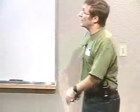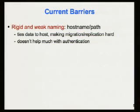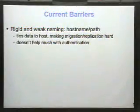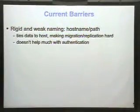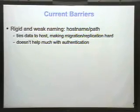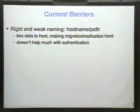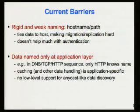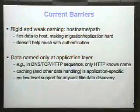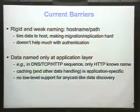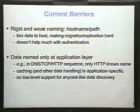So if this is what users care about, what are the barriers today? One barrier is that naming is both rigid and weak — the worst of both worlds. It's rigid in that it's tied to a host, so moving data is very hard. The name is weak in that it doesn't help with authentication — you cannot tell by looking at the data and the name that those two things go together. And data is only named at the application level, so any caching has to be application-specific with no low-level support for cached data discovery.